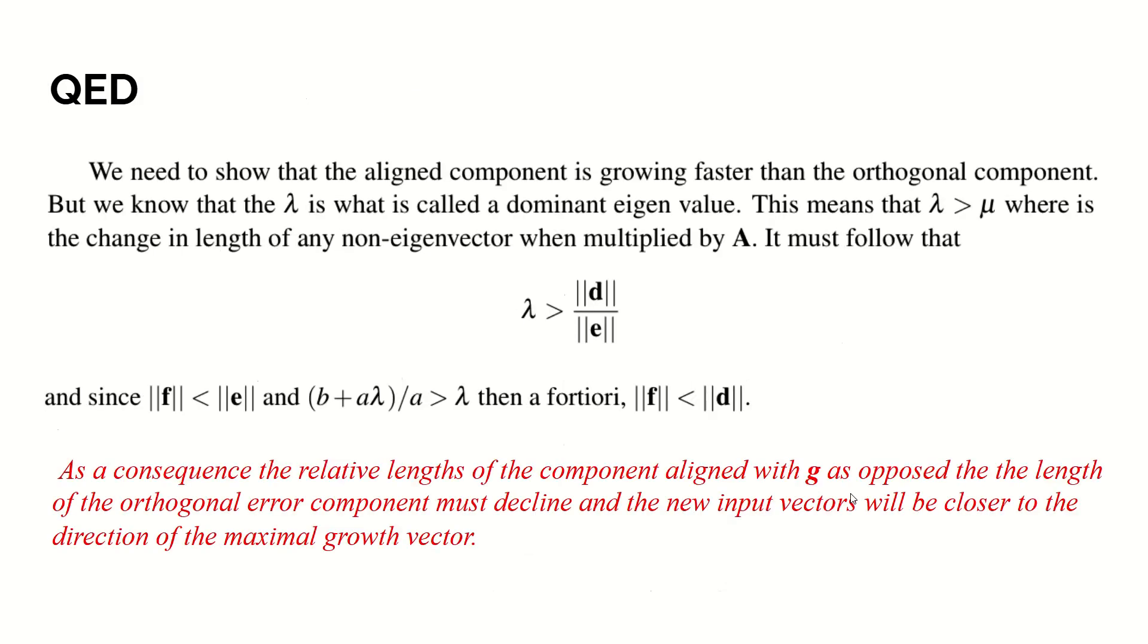This implies that A times the X prime is going to be B plus A lambda G plus F. So we want to show that F is getting smaller as a percentage. We need to show that the aligned component is growing faster than the orthogonal component. But lambda is what's called the dominant eigenvalue. This means that lambda is greater than mu, where mu is the change in length of any non-eigenvector when multiplied by A. It follows, therefore, that lambda is greater than D upon E, or the length of D upon the length of E. And since the length of F is less than the length of E, because we've split it up into two components, and B plus A lambda over lambda must be greater than lambda.